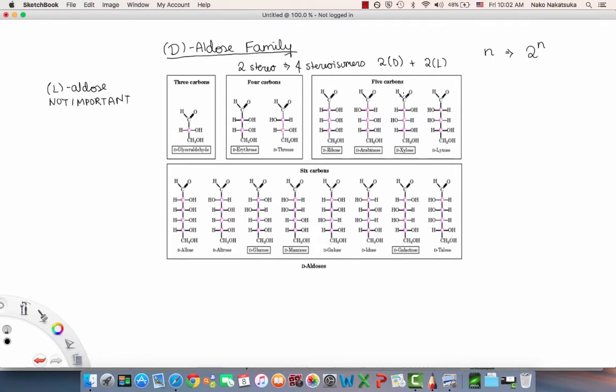Now when we have five carbons, the aldopentoses, we have three stereocenters. If we do two to the power of three, we're going to have eight stereoisomers. In this case, you're seeing the four that are D. As you can see, the ones that are boxed that are important are ribose, D-arabinose, and D-xylose.